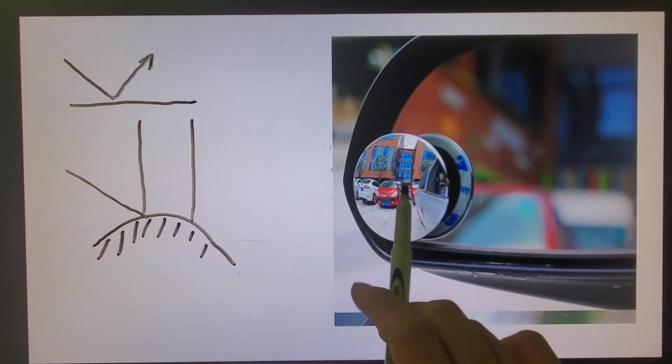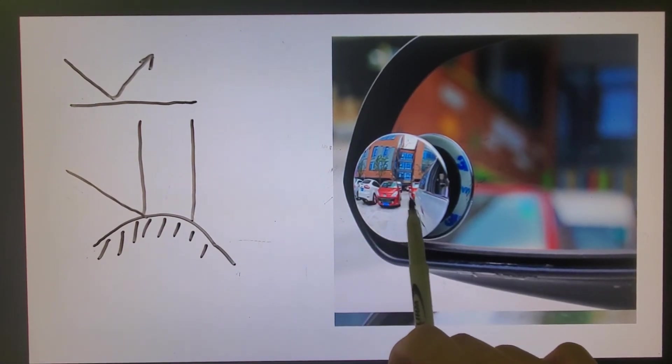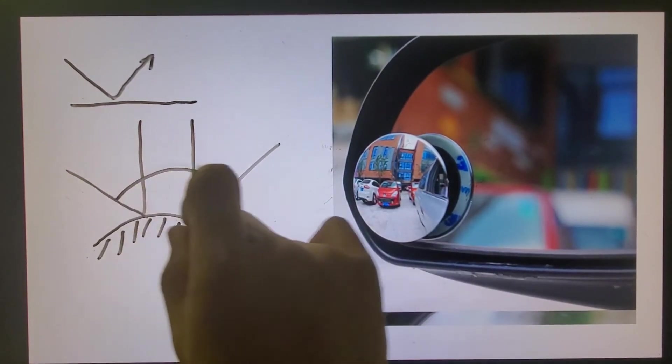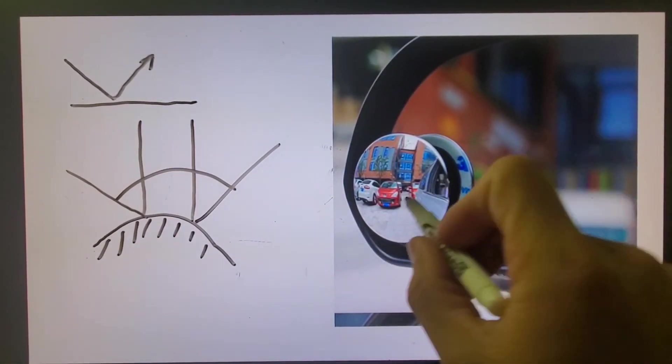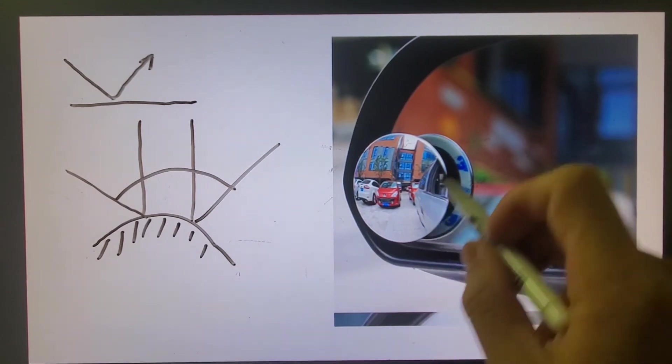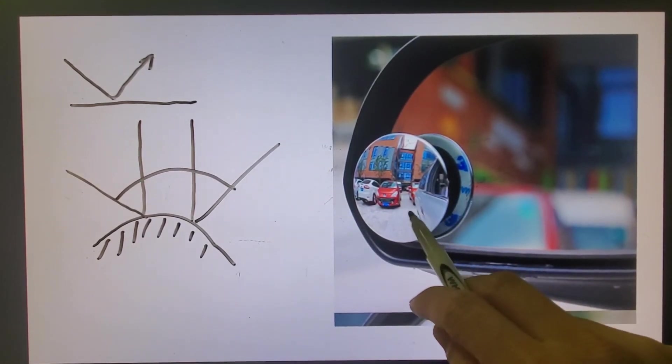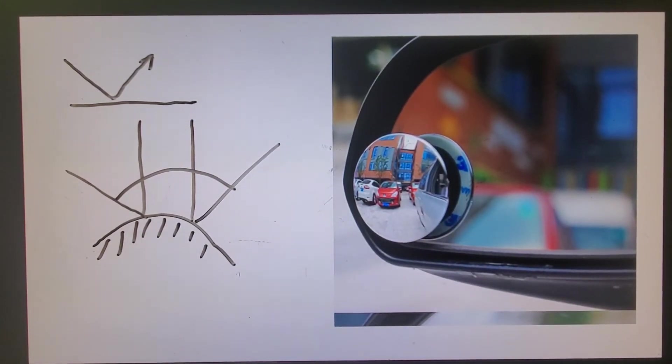Over here, you look at this convex mirror. Why do we use that? Because based on here, we can see a bigger angle. So when we put this little convex mirror in our flat mirror, we can see a bigger angle. Sometimes we put this little mirror to see the blind spot.